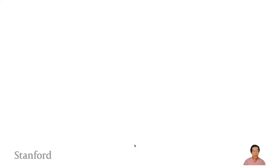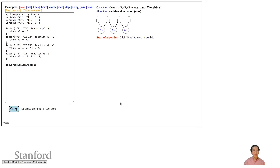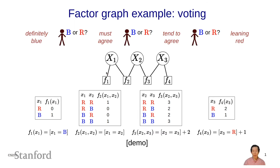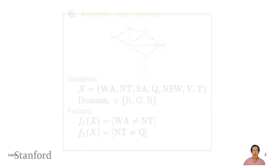If you click on the demo in the slides, that will take you to a little JavaScript application where you can write your own factor graph. We'll come back to this later. This is the first example of a factor graph capturing a simple voting situation.